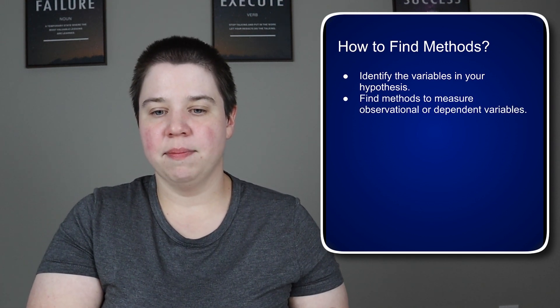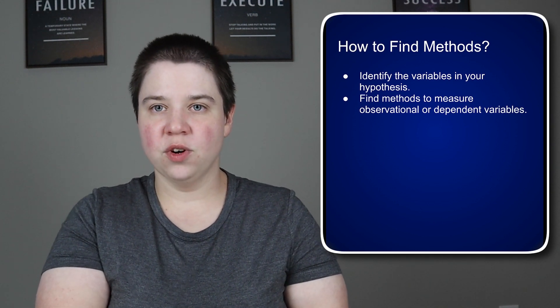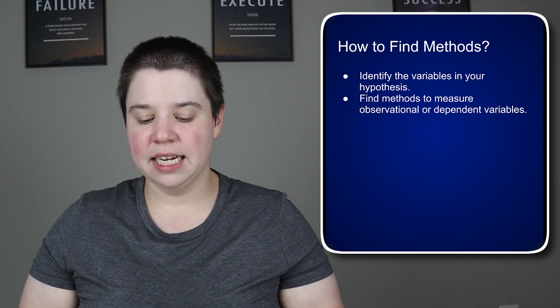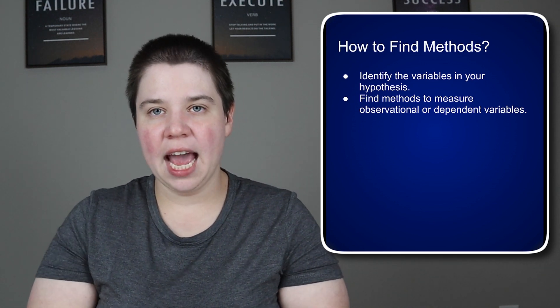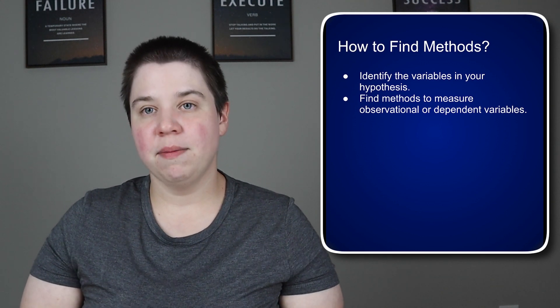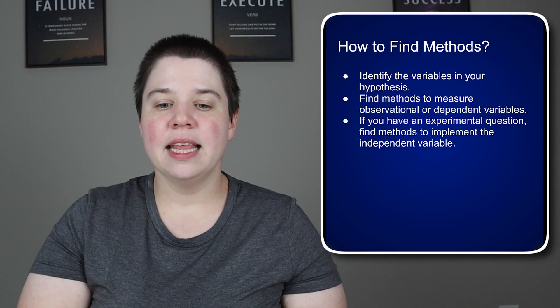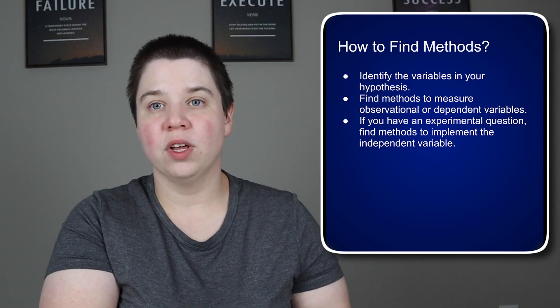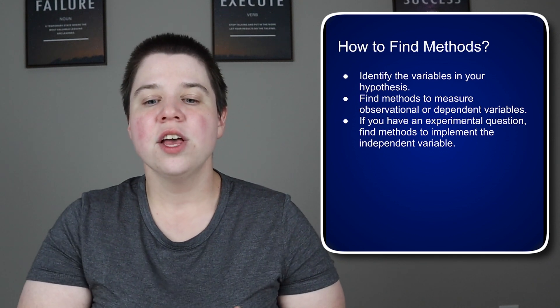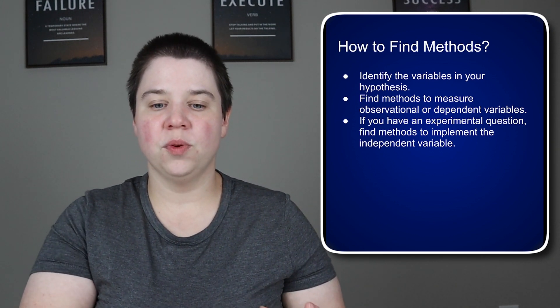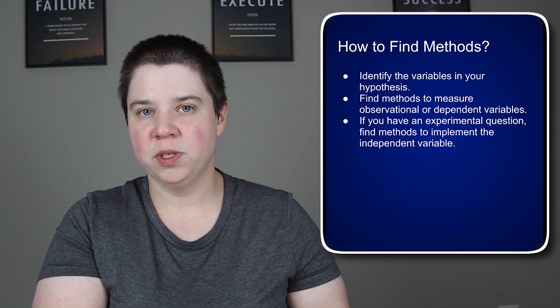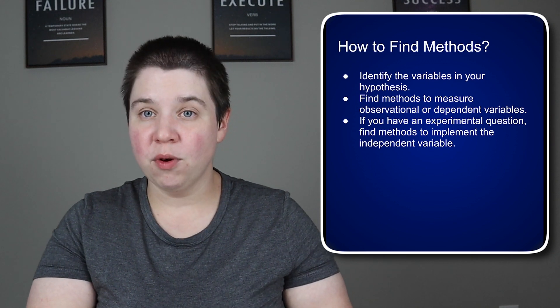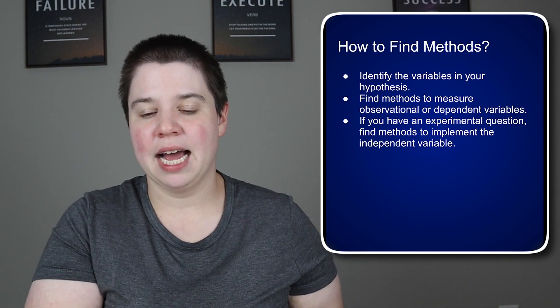And so we want to find methods to measure observational or dependent variables. The dependent variables or the observational variables in that sentence would be my muscle hypertrophy and my feelings of fatigue. So we need to find methods that are going to measure those. And then if we have an experimental question, which in that question it was because we have something and we're looking for a direct cause, not a correlation. So if we have that, we need to also find methods to implement the independent variable. The independent variable was peripheral heart action circuit training. And so I need to figure out what are the different protocols that have been used in the literature to implement that kind of circuit training.